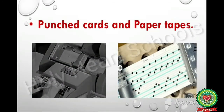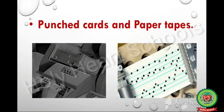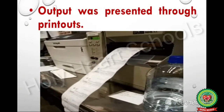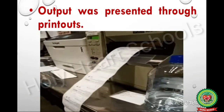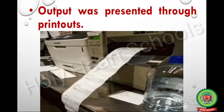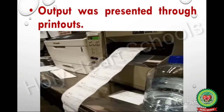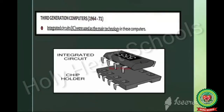Punched cards and paper tapes were used as input devices, and output was presented through printouts. As compared to first generation computers, these computers were faster, cheaper, and smaller. Examples of second generation computers are IBM 1400 and IBM 350.